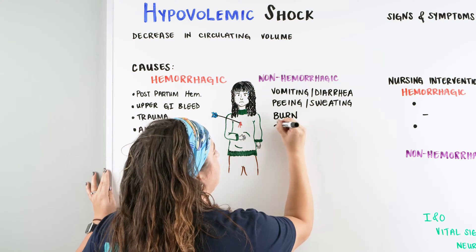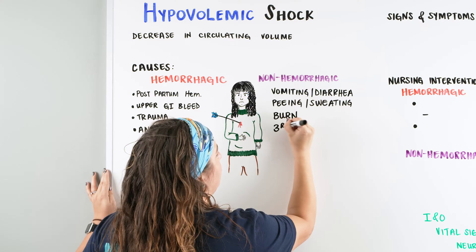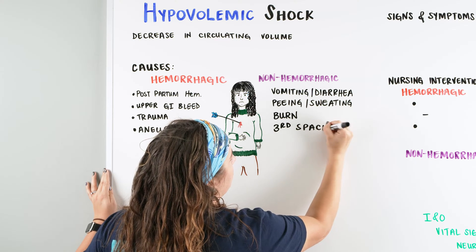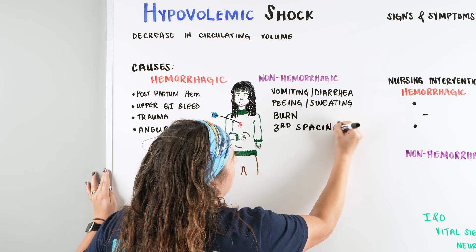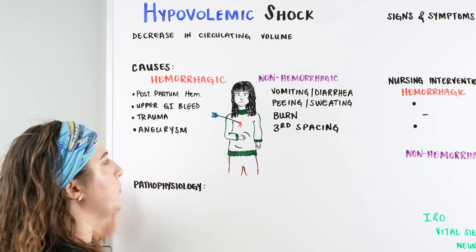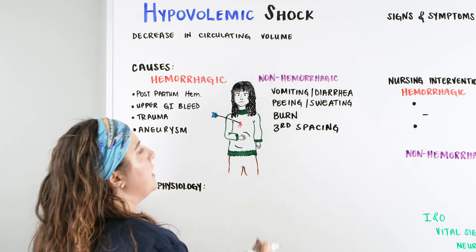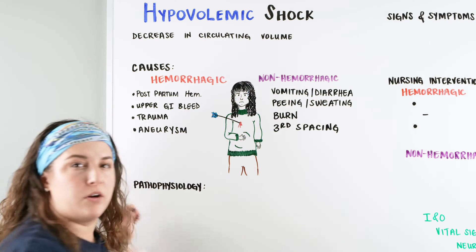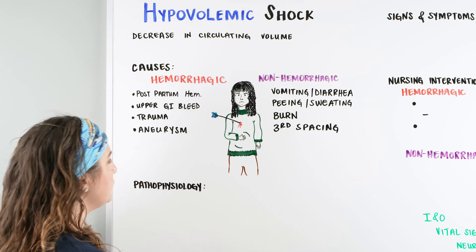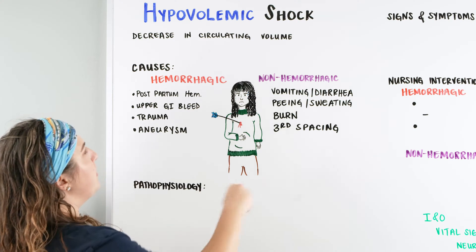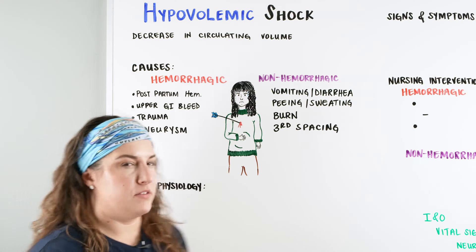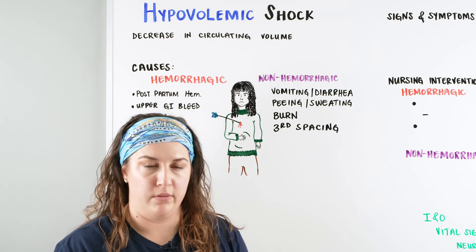And the last thing we want to think about is where patients have third spacing of fluid — they're having lots of edema, maybe ascites, and the fluid that should be intravascular is now interstitial in a place that it shouldn't be. So when we think about hypovolemic shock, we need to think about how this is going to occur within the body.